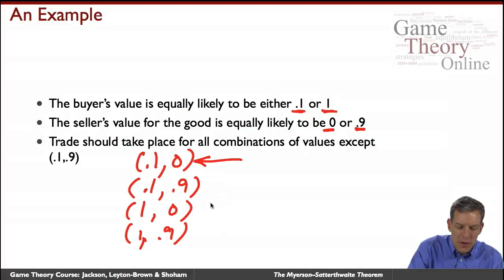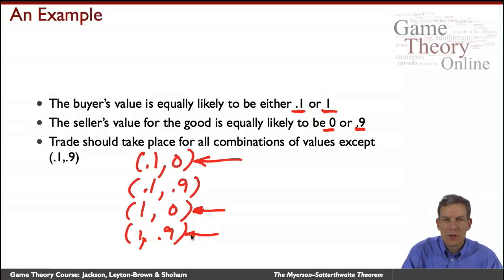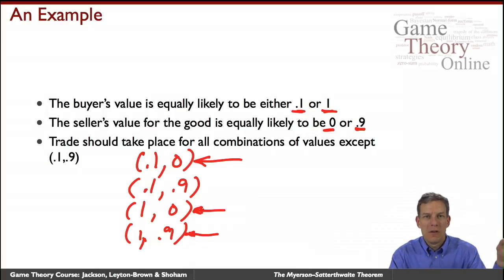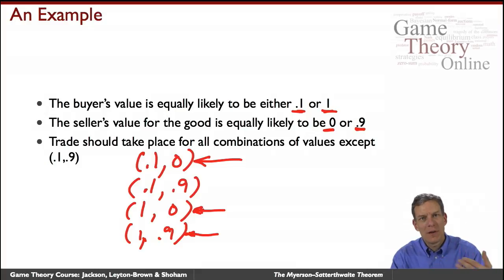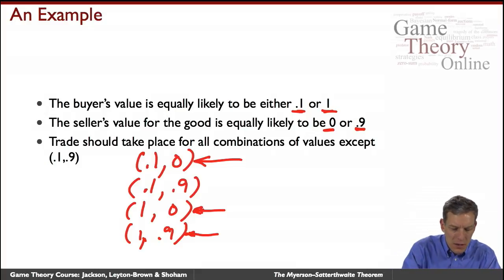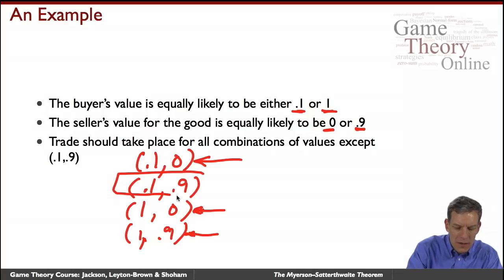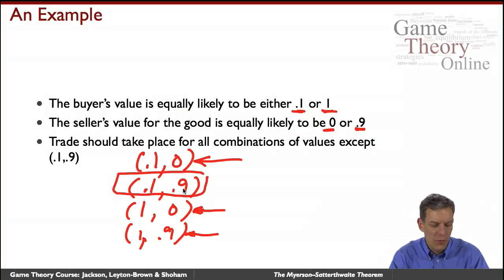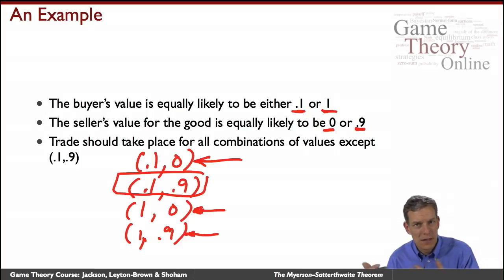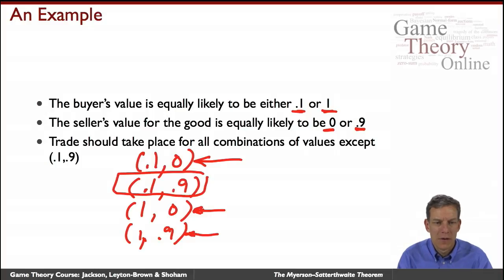In three of those four cases the buyer's value is higher than the seller's, so we should have a transaction — there's an efficiency gain in trading the good from seller to buyer. The only case where there shouldn't be trade is when the buyer has a low value of 0.1 and the seller has a high value of 0.9. In that case it's better to leave it in the seller's hands.